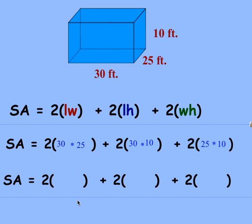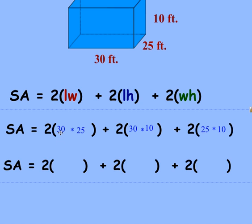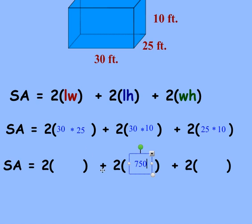At this point, you just do your multiplication. If I remember right, 30 times 25 is 750, so I'm going to put 750 for the area of the bottom here. 30 times 10 is 300, so that is going to be for the area of the front. And 25 times 10 is 250, and that's going to give me the area of one of the sides.